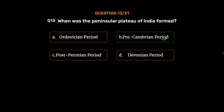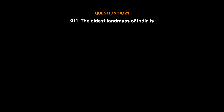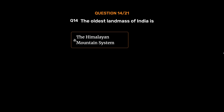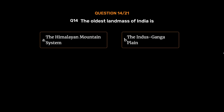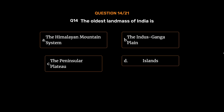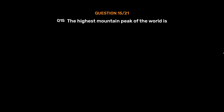Question number 14: The oldest land mass of India is — Option A: The Himalayan mountain system. Option B: The Indus-Ganga Plain. Option C: The Peninsular Plateau. Option D: Islands. The correct answer is Option C, The Peninsular Plateau.